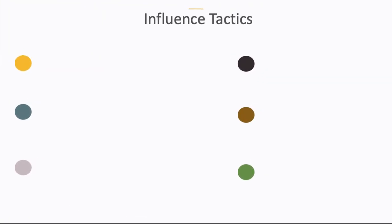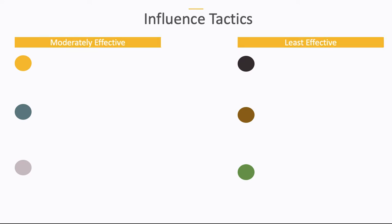Now we'll go through the remaining influence tactics. On the left we'll describe three tactics that are moderately effective, and then three tactics that are less effective for changing behavior and getting those behaviors to sustain over time. The first moderately effective strategy is called ingratiation. This is basically when we use favors, compliments, or very friendly behavior that might be over the top in order to change someone's mind — informally, we might call this sucking up to someone.